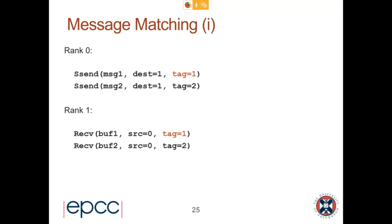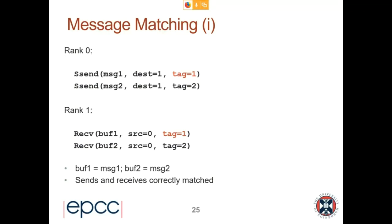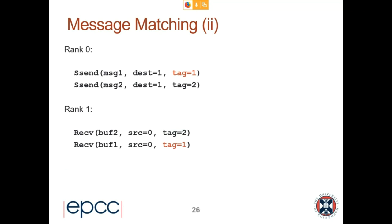Looking at message matching examples: rank 0 is sending two messages synchronously to rank 1 with tag 1 and tag 2, and meanwhile rank 1 has posted two receives into buffer 1 and buffer 2 from rank 0 with tag 1 and tag 2. This will be fine — the first synchronous send and first receive match because they have the right source, destination, and same tags. They complete, then the second send and receive are posted and complete successfully.